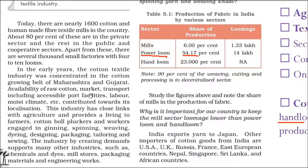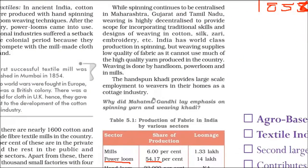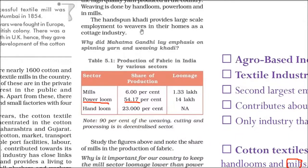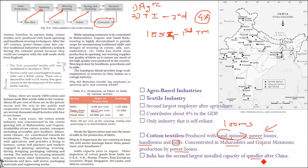The textile industry is not only for fabric — packagers, dyers, chemical suppliers, mill stores, and engineering works also get jobs from this industry. Handspun khadi, made famous by Mahatma Gandhi, provides large-scale employment to weavers working in cottage industries. India has the second largest installed capacity of spindles after China.